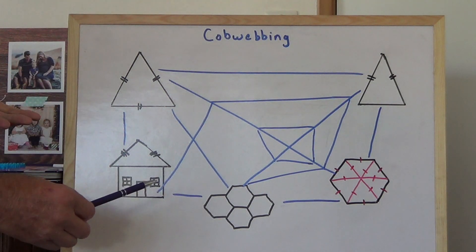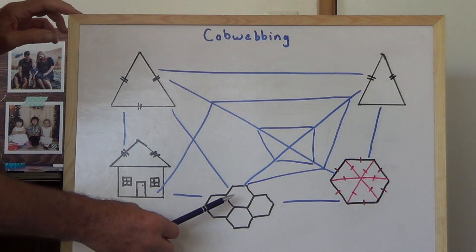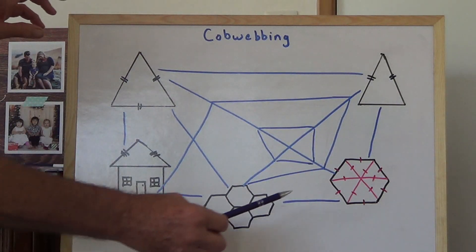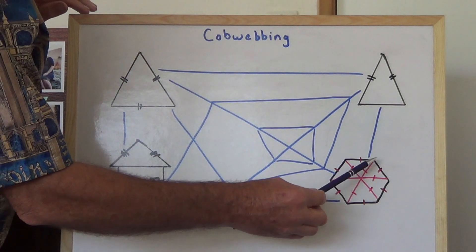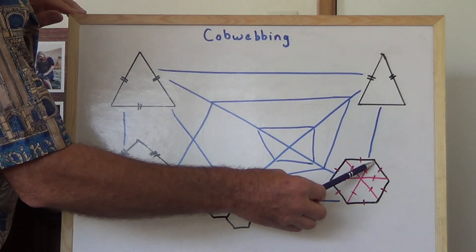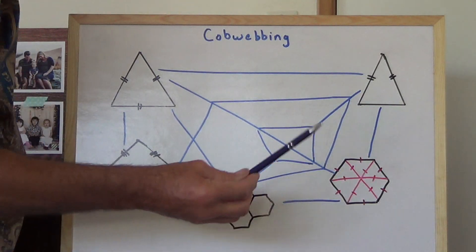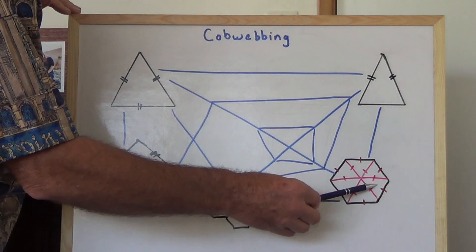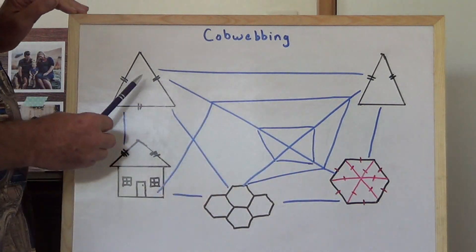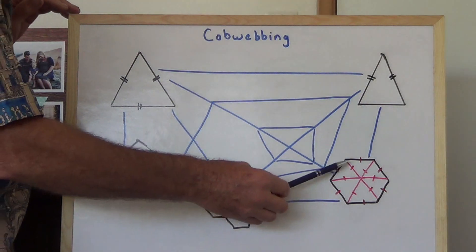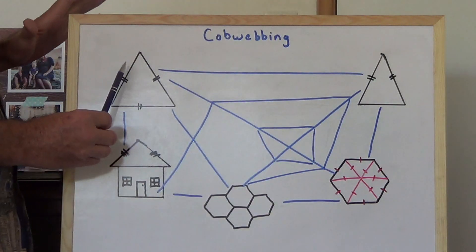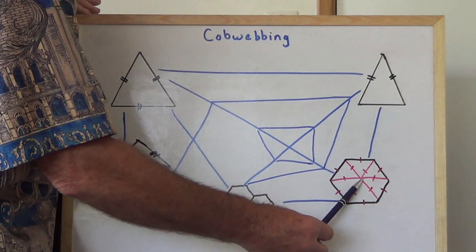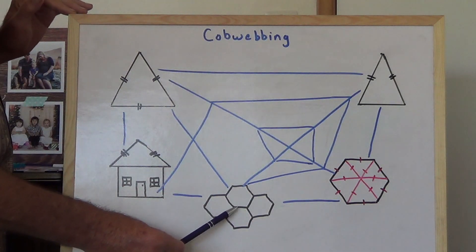You find this in beehives. What we're going to do is take one of these hexagons and blow it up so it looks a bit bigger. Then we put the diagonals in. Believe it or not, there are six equilateral triangles. Each of those is an equilateral triangle. So an equilateral triangle is related to a hexagon, which is related to honeycomb.